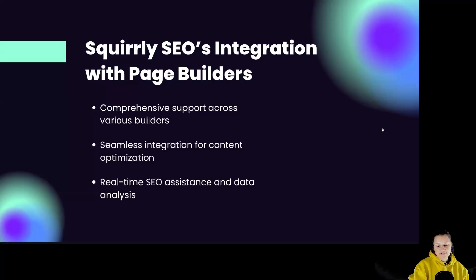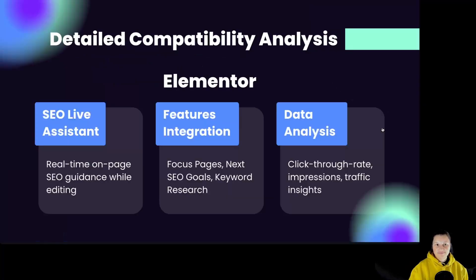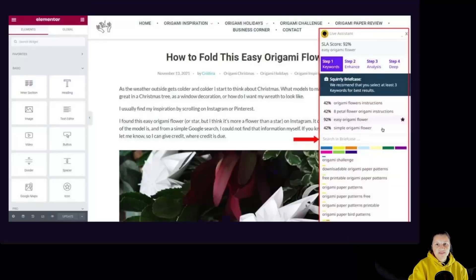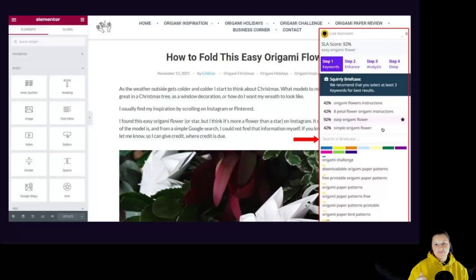So let's dive into the specifics for each page builder. For Elementor, you have an SEO live assistant with access to real-time on-page SEO guidance while editing. Features include focus pages, SEO goals, keyword research, and in-depth analysis covering click-through rates, impressions, and traffic insights. Elementor users benefit from Squarly's SEO live assistant providing actionable insights as you design, with key features like focus pages and keyword research to enhance content optimization and performance tracking.